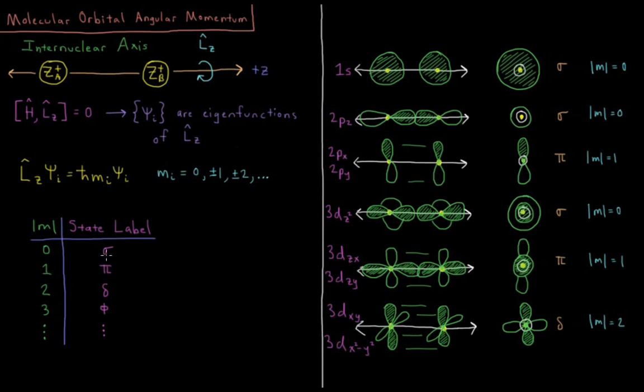Notice that these lowercase Greek letters are corresponding to a similar letter which corresponds to the English S, P, D, F, etc. Sigma S, Pi, P, Delta, D, Phi, F.